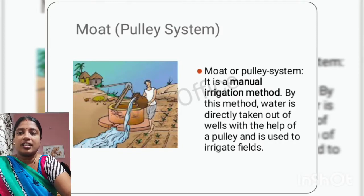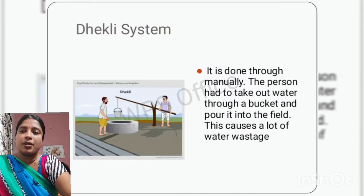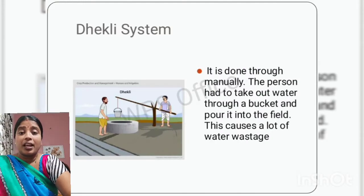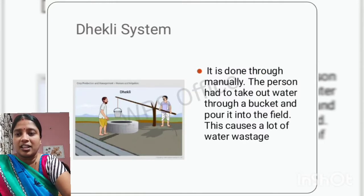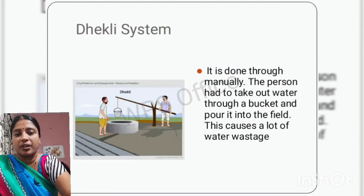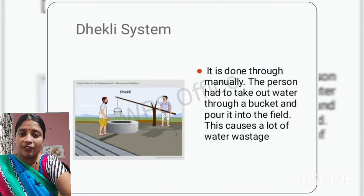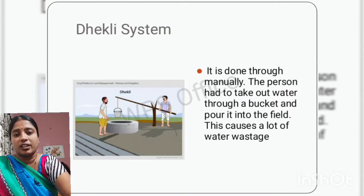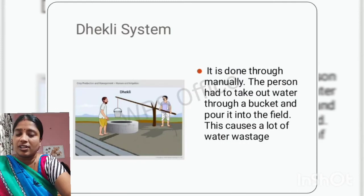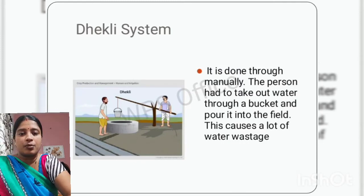The next method is the dhekli system. Instead of using a pulley, it is also done manually — the person takes out water from the well with the help of a bucket and then pours it into the field. It does not have a pulley system. This method also causes a lot of wastage of water — lots of water gets wasted in this system of irrigation.